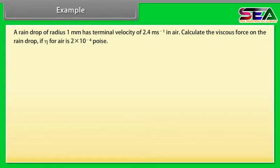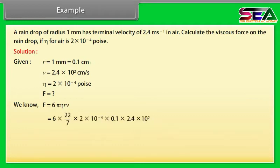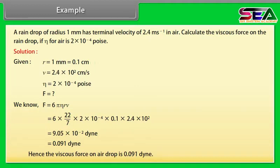Example on Stokes' law: A raindrop of radius 1 mm has a terminal velocity of 2.4 m/s in air. Calculate the viscous force on the raindrop if η for air is 2 × 10⁻⁴ poise. Given: R = 0.1 cm, V = 2.4 × 10² cm/s, η = 2 × 10⁻⁴ poise. Using F = 6πηRV and substituting values, we get F = 9.05 × 10⁻² dyne = 0.091 dyne. Hence, the viscous force on the raindrop is 0.091 dyne.